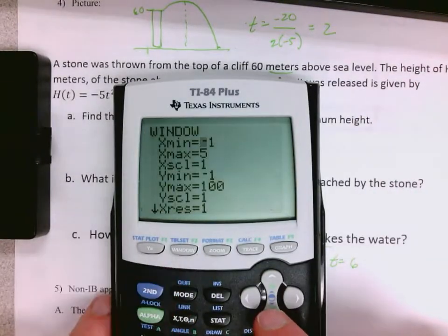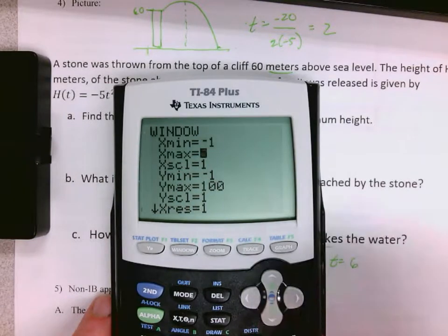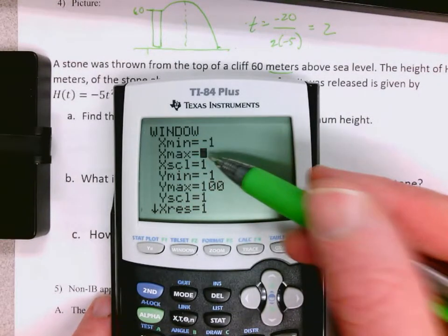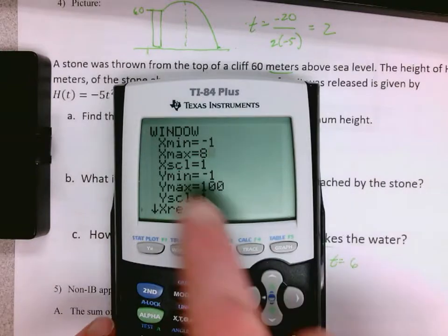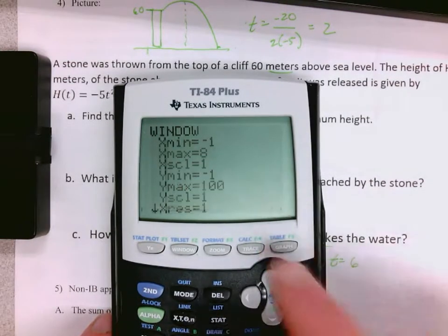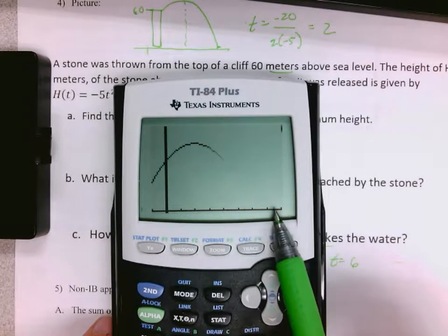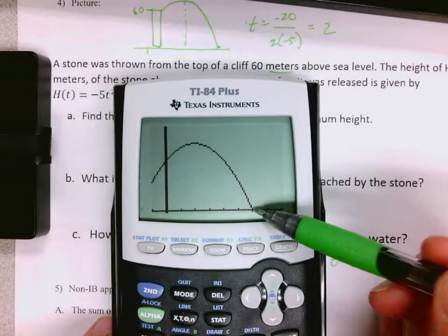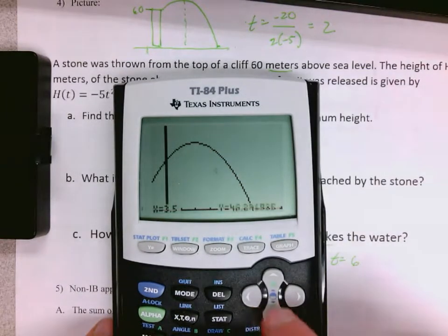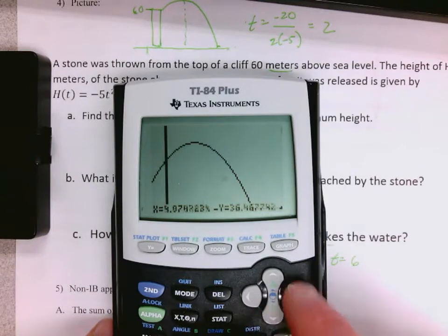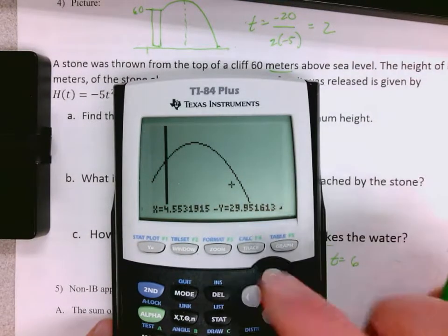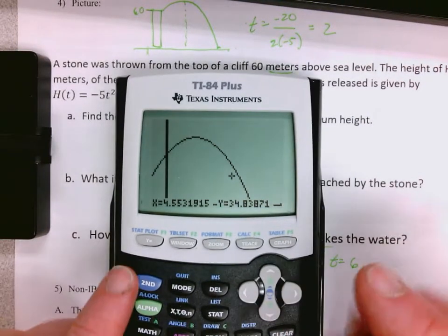So I'm going to change the window on my calculator. Right now I only see up to 5. I'm going to see up to 8 on the axis, so I'm stretching out the x's a little bit. Now I can see where it hits. People like to do this and go, I don't see where it is on here.